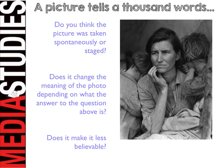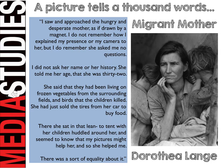Here is a quotation from the photographer Dorothea Lange herself: 'I saw and approached the hungry and desperate mother as if drawn by a magnet. I do not remember how I explained my presence or my camera to her, but I do remember that she asked me no questions. I did not ask her name or her history. She told me her age — that she was 32. She said she had been living on frozen vegetables from the surrounding fields and birds that the children had killed. She had just sold the tyres from her car to buy food. There she sat in that lean-to tent with her children huddled around her, and seemed to know that my pictures might help her and so she helped me. There was a sort of equality about it.'